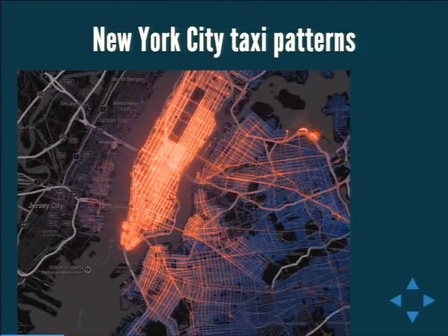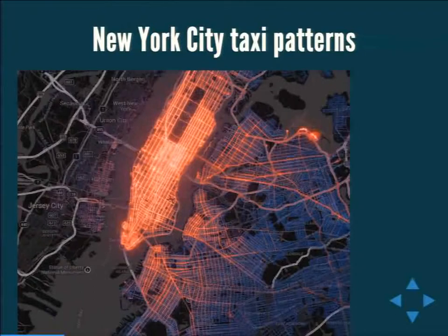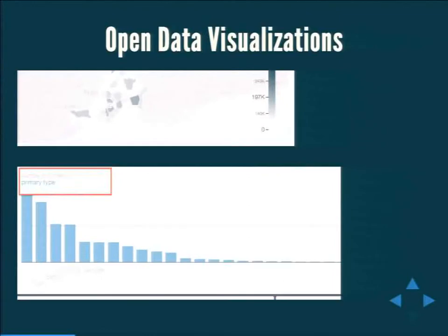A better example is the New York City taxi pattern. This is from public NYC taxi data and you can plot it to get a visualization of where trips are happening. We also have a choropleth of crimes by zip code in the New York City area, with heavier gradations representing more crime.